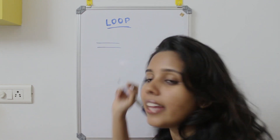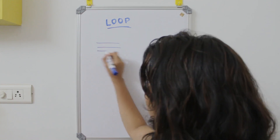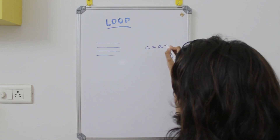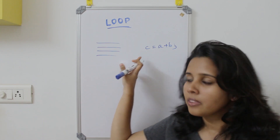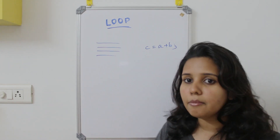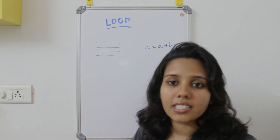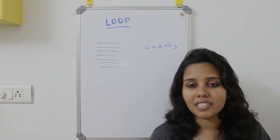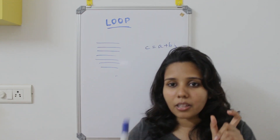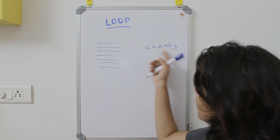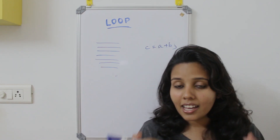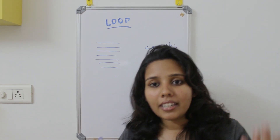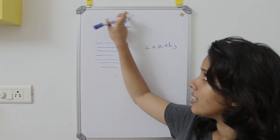In the last class, we learned C programming where we call C equal to A plus B. We will do that line, and the same process will repeat for 10 statements. So if you are writing a repeated statement, you will use the concept of a loop.